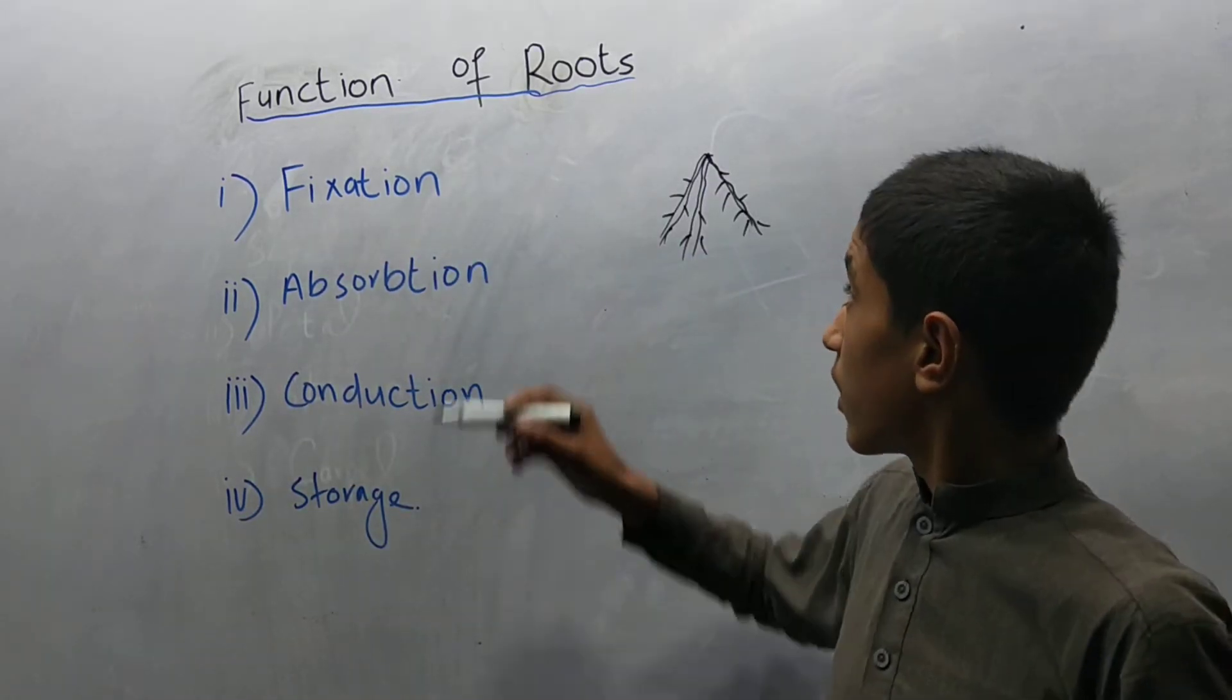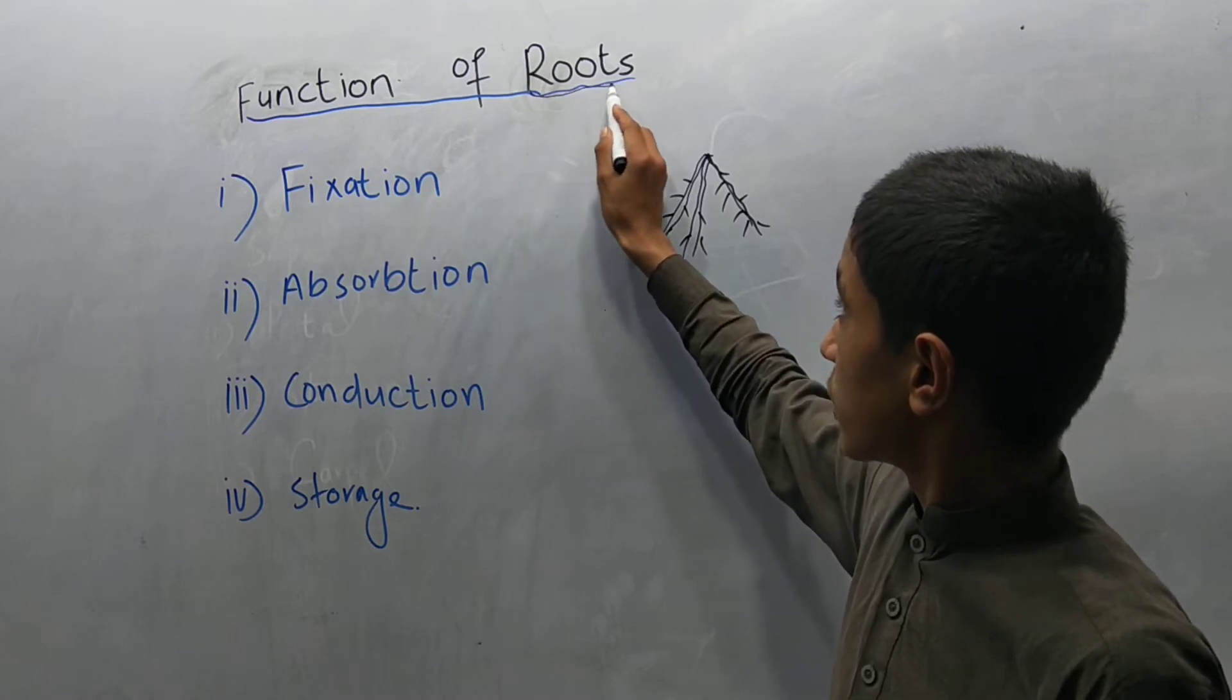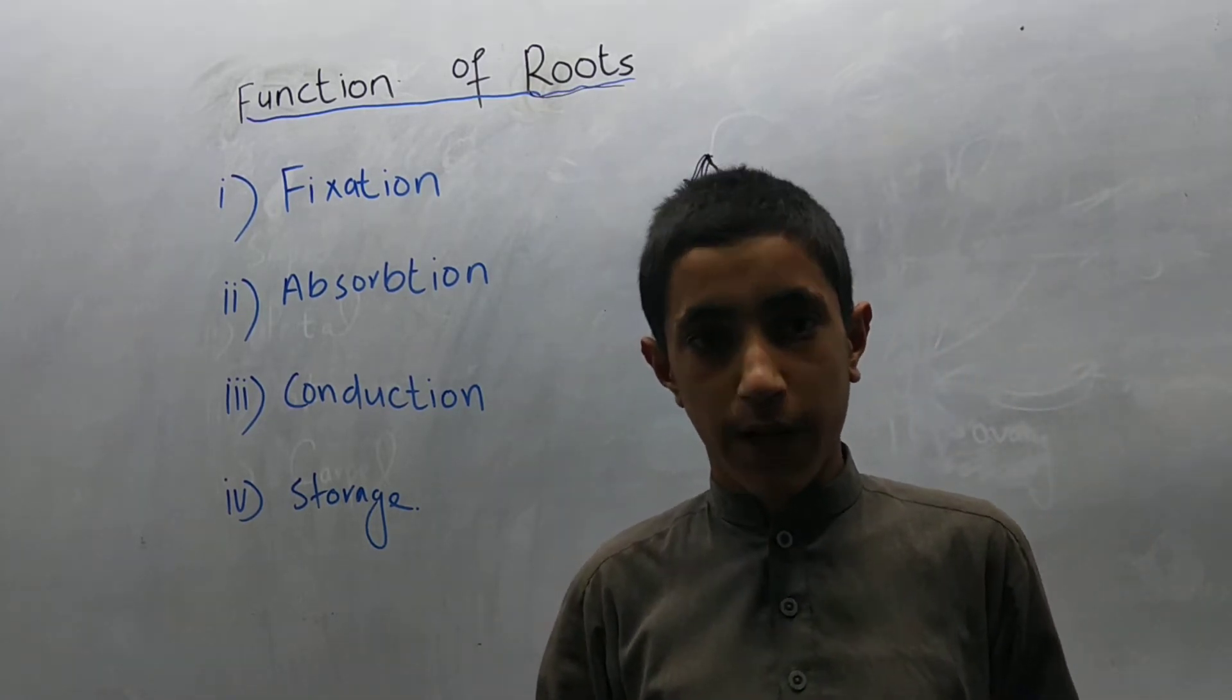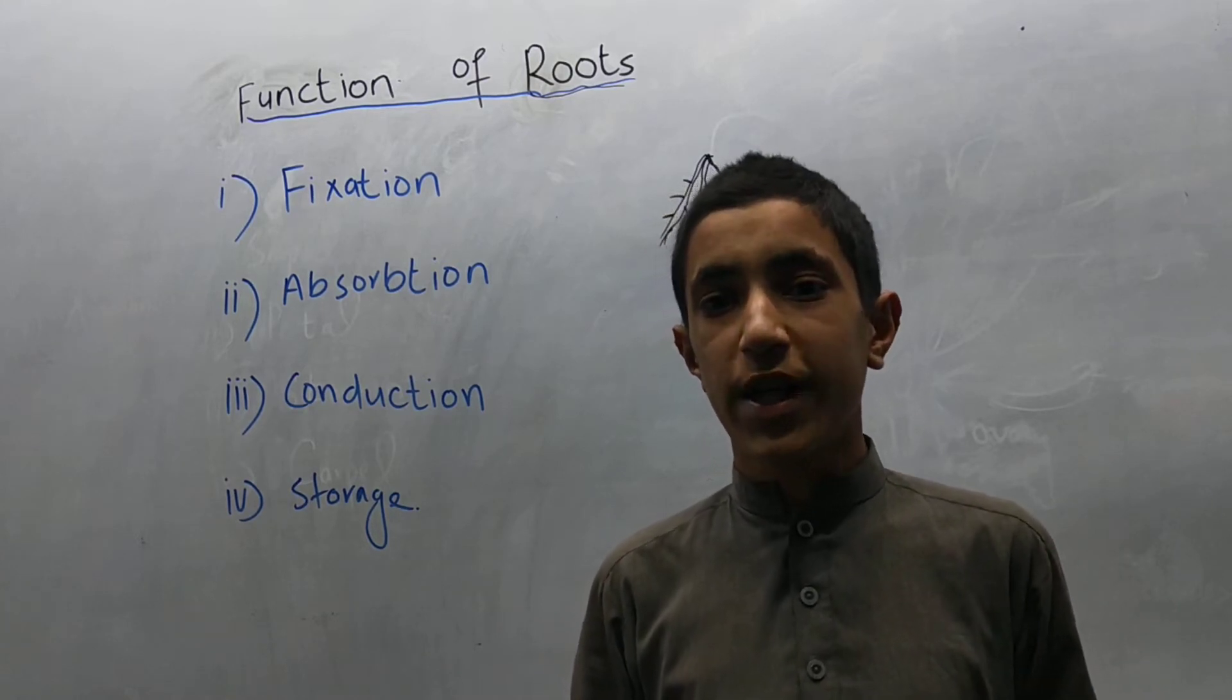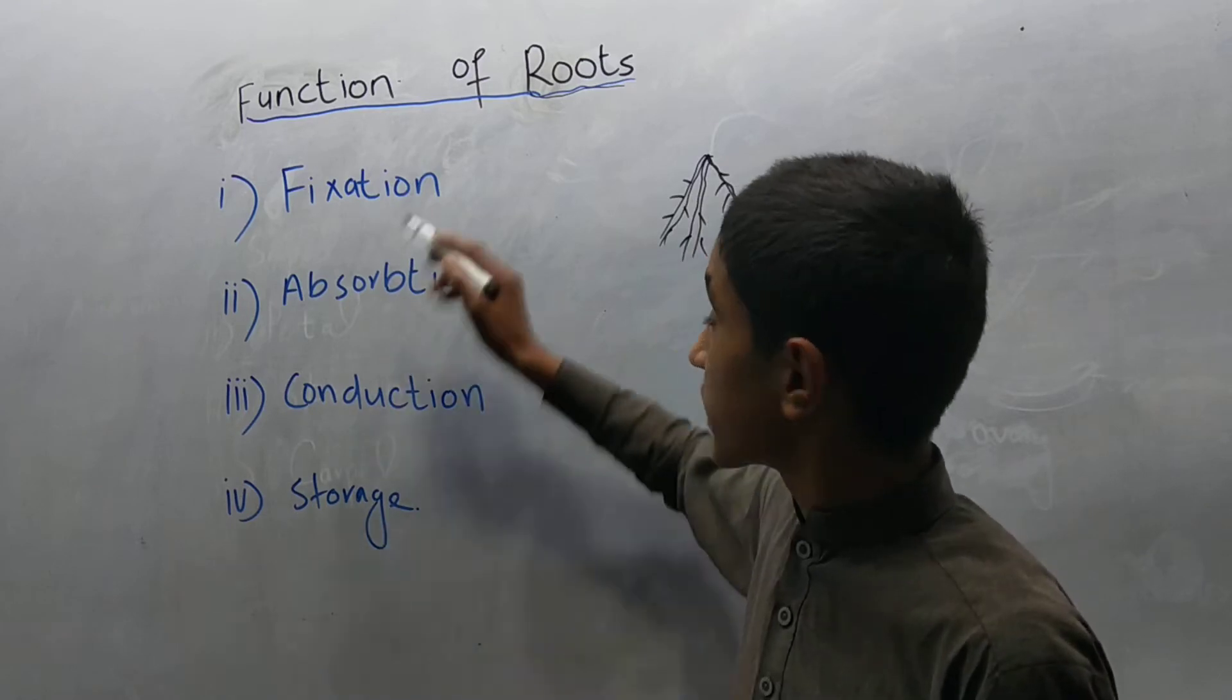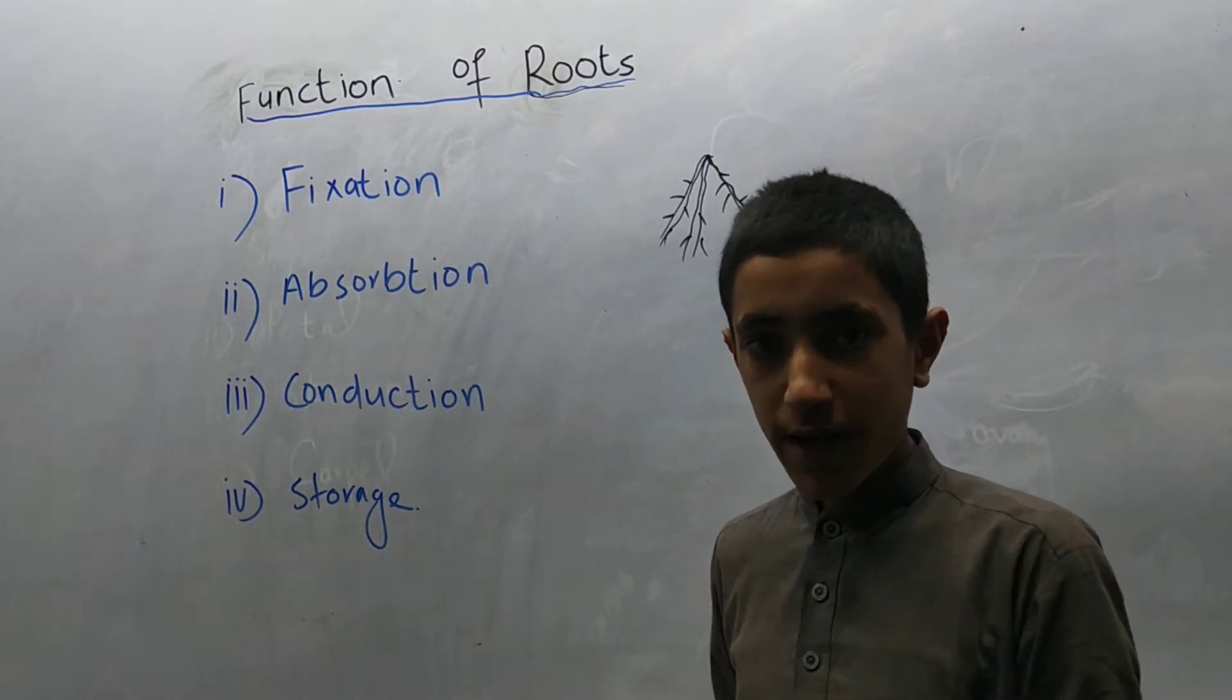Before discussing, I will explain what a root is. Root is the non-green part of the plant. Root is mostly brown, red, etc., and is also away from the sunlight.